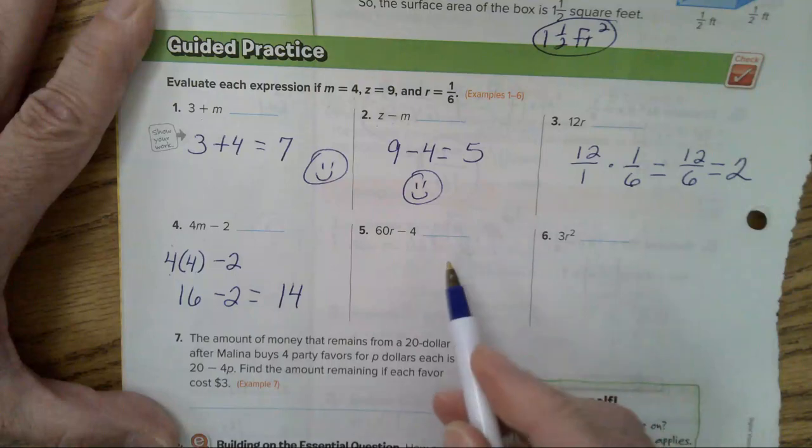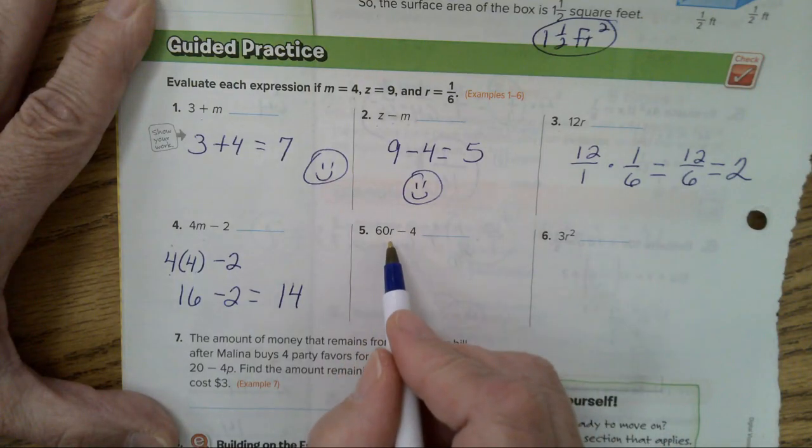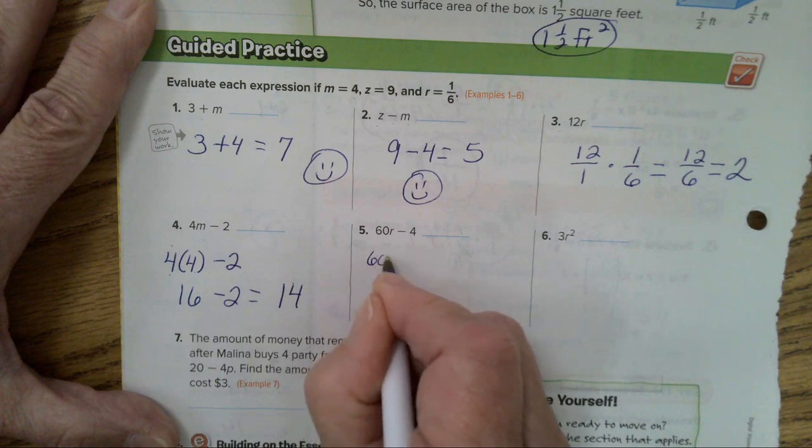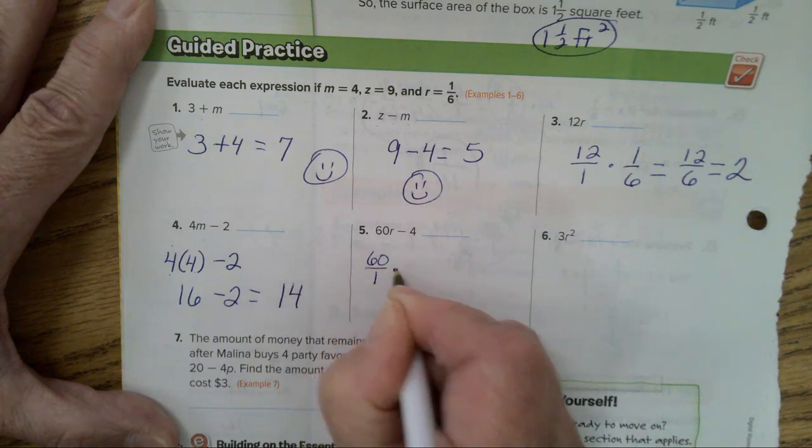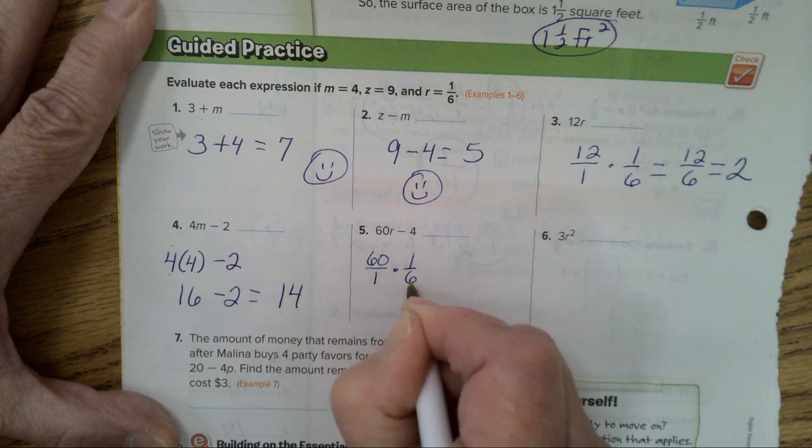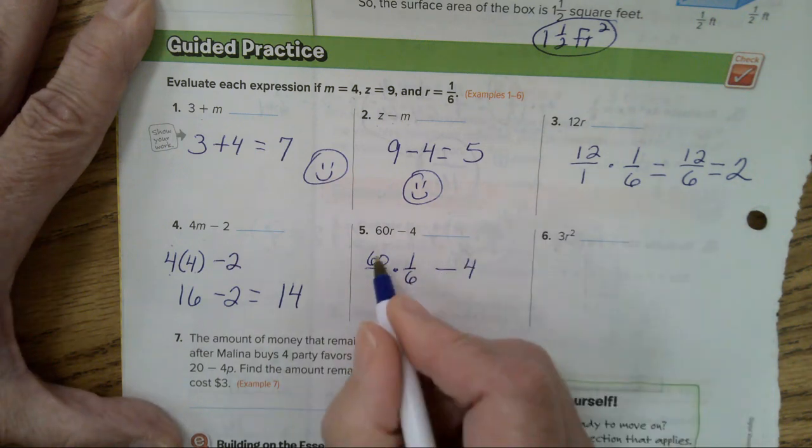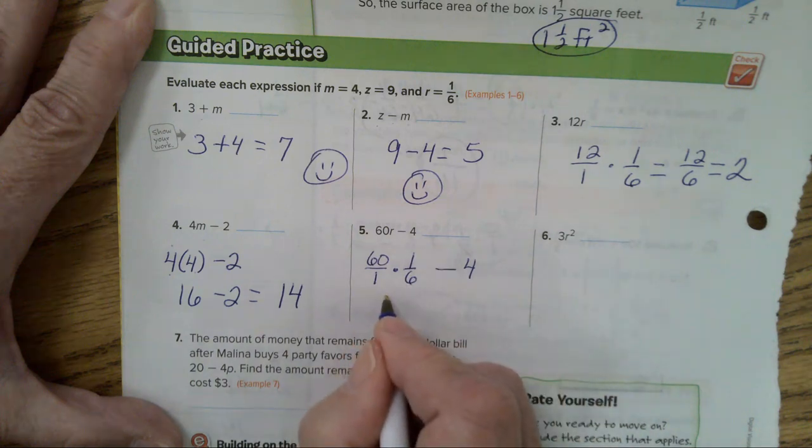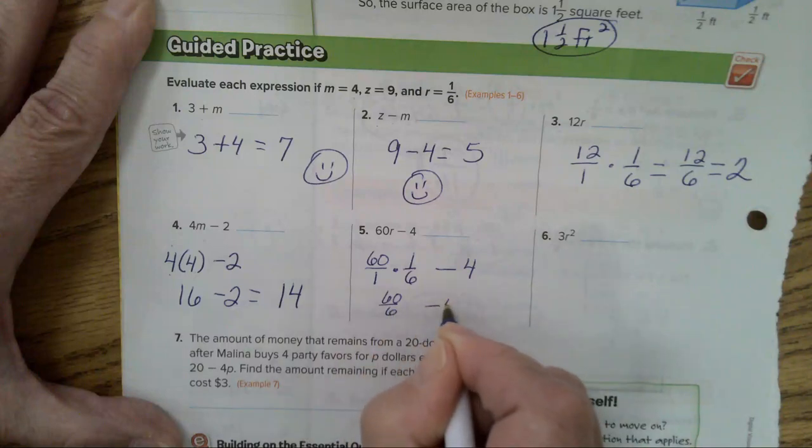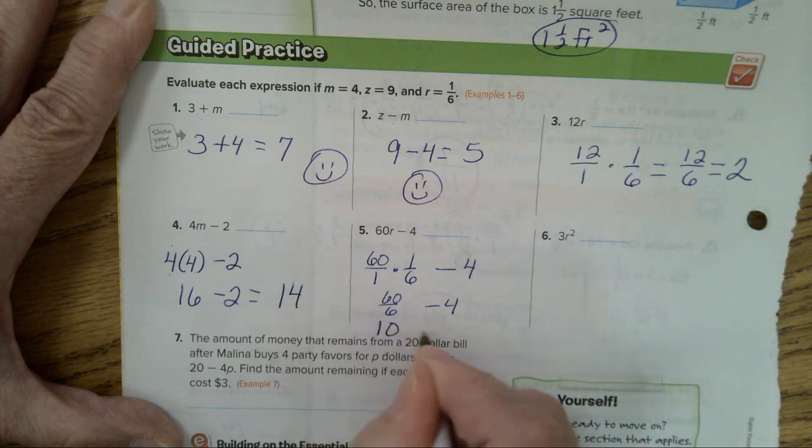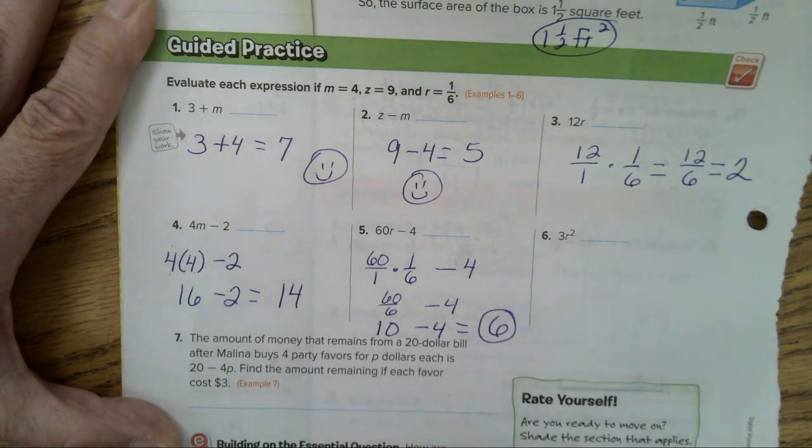Let's do number 5. 60 times R. Now, R is the fraction. So, I'm going to write 60 as a fraction. 60 over 1 times 1 sixth, and then subtract 4. Well, 60 times 1 is 60, and you end up with 60 over 6 minus 4. 60 over 6 is the same thing as 10, and 10 minus 4 gives you the final answer of 6.